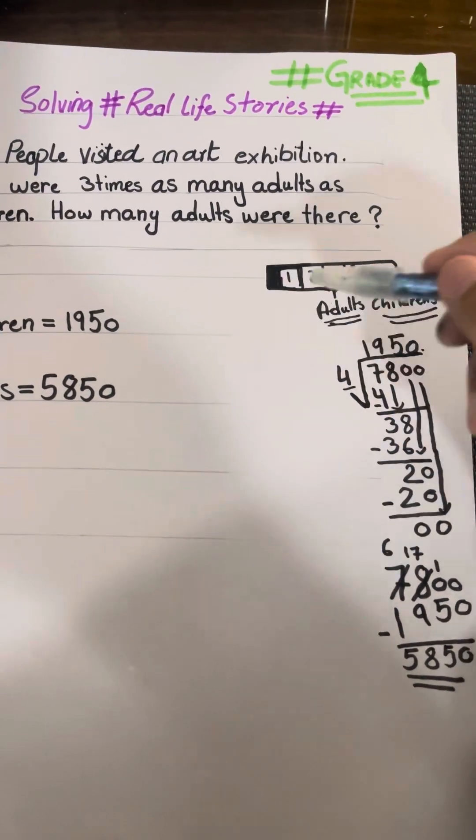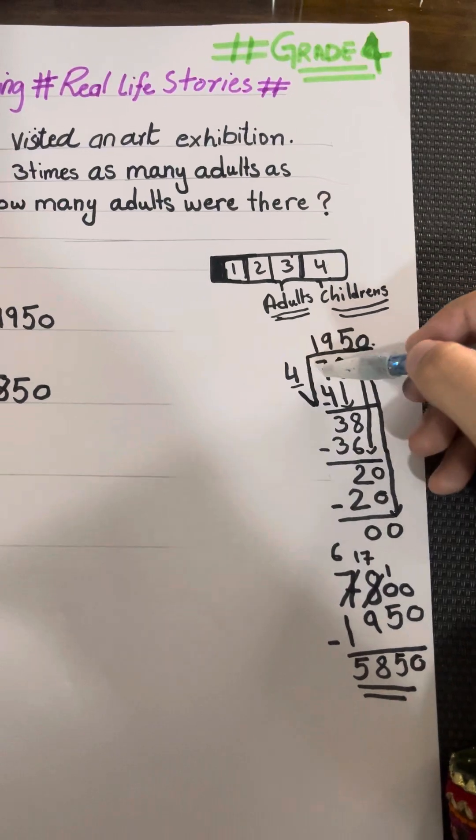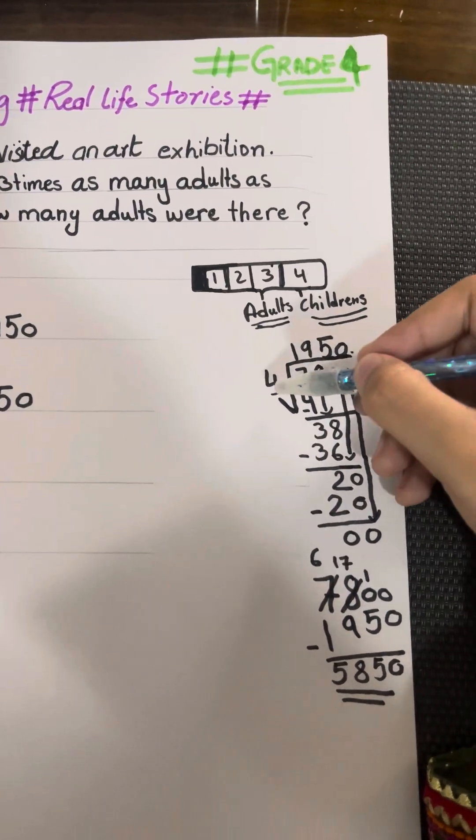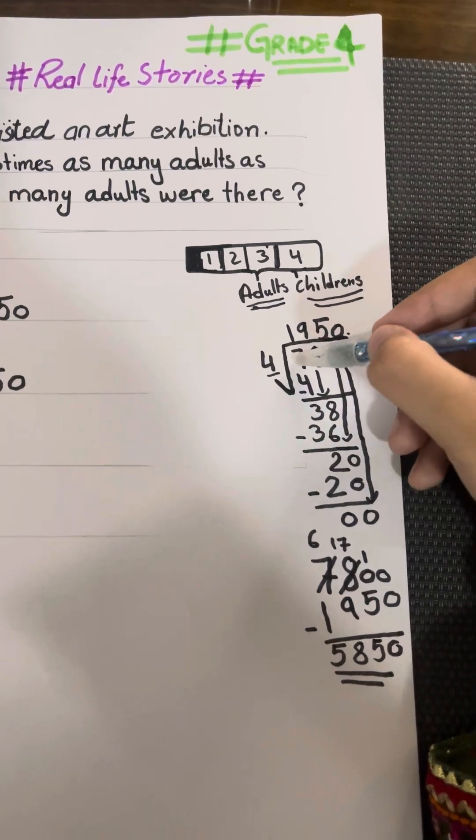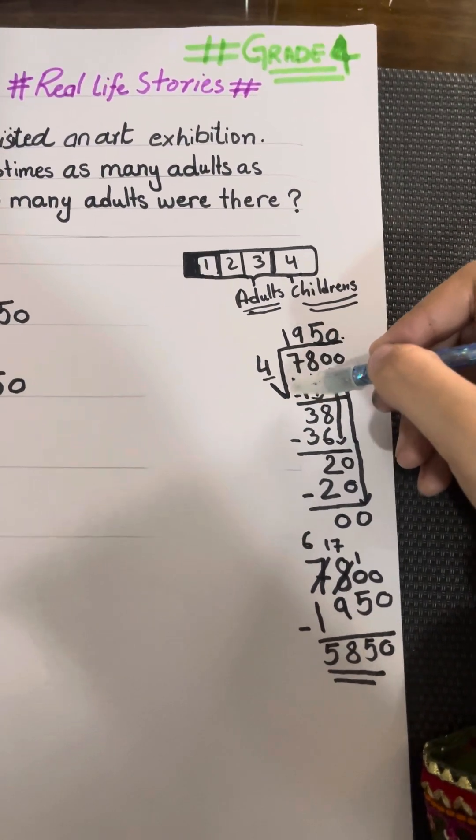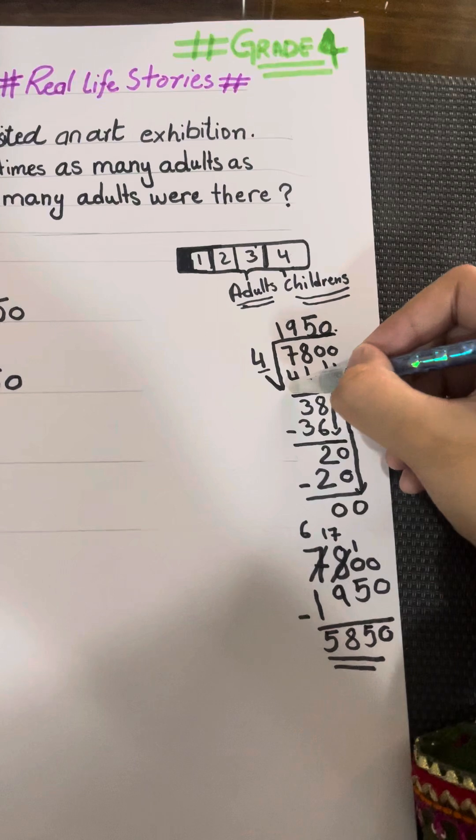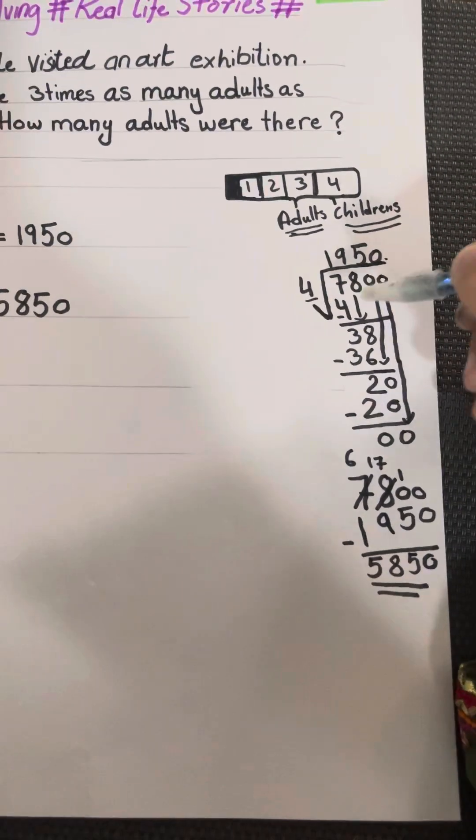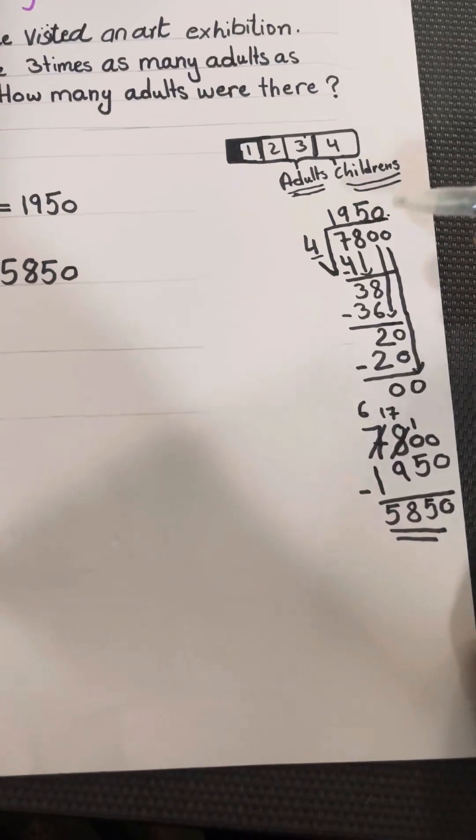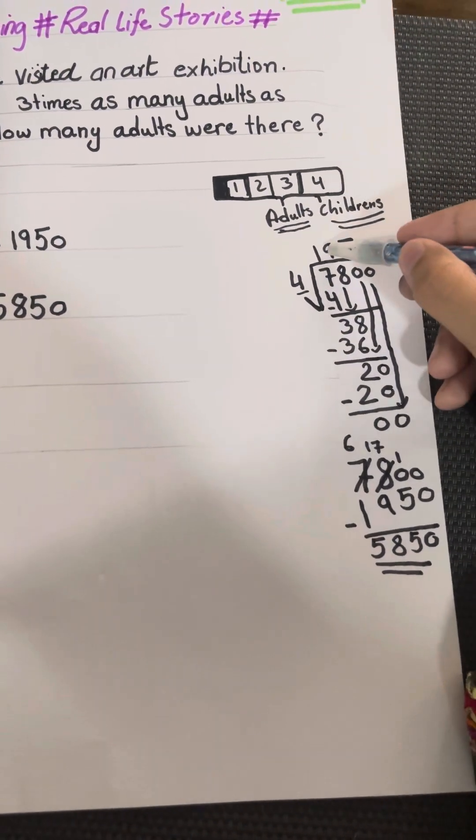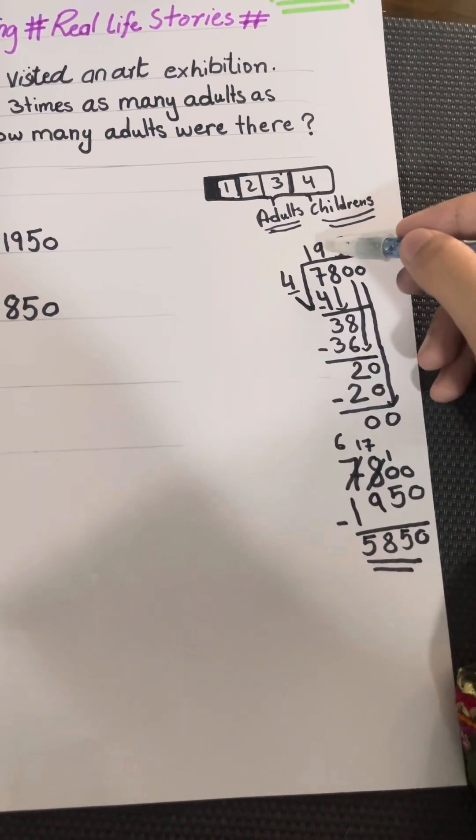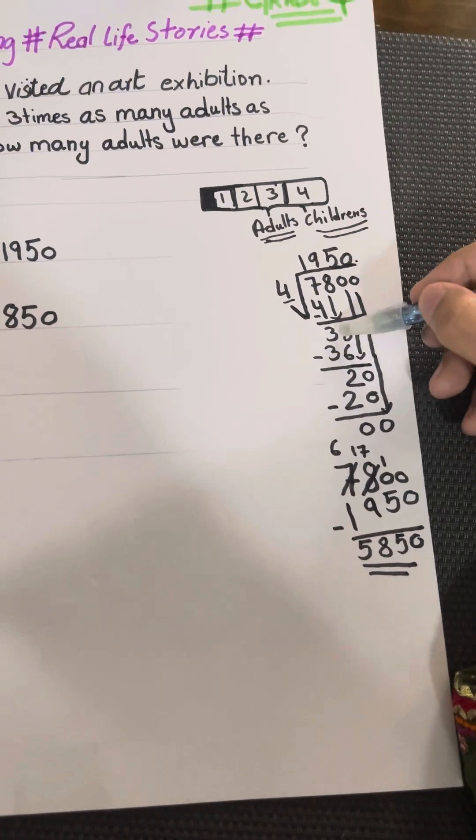We're going to divide 7,800 divided by 4. So 7 minus 4 ones are 4, so 4 goes here. 7 minus 4 is 3. 3 doesn't go, so bring down 8. 38 doesn't go into 4, so it's 9. 4 nines are 36, so minus it.